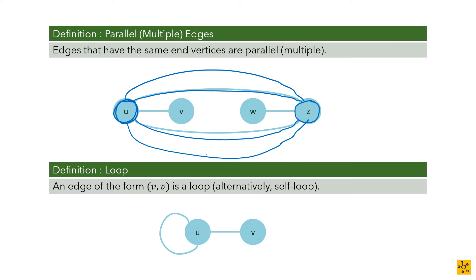A more concrete example: think about your neighborhood and how you would map the roads. If directed, you would have a line for each direction of the road. If undirected, you would just have two lines representing the two lanes — two ways to get anywhere. That is where parallel or multiple edges come from.